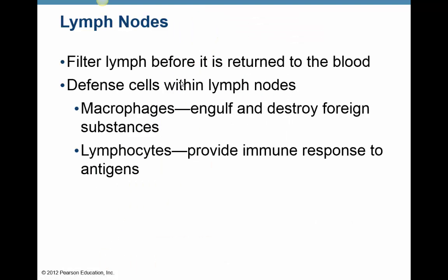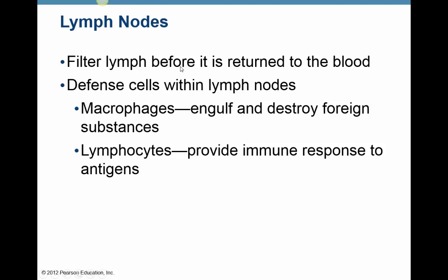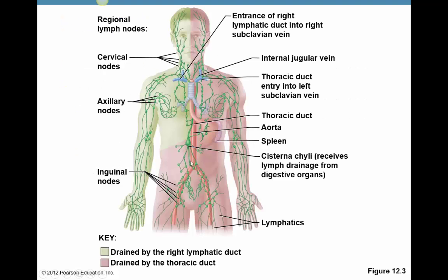Lymph nodes filter that lymph before it goes back to the general blood supply. What we find in lymph nodes are macrophages — which are monocytes found in tissues — whose job is to phagocytose and destroy foreign substances like bacteria and cellular debris. We also find lymphocytes, the T cells and B cells, which are part of our immune system. Together, macrophages and lymphocytes attack any debris in the lymph before it's returned to the general blood supply near the heart.